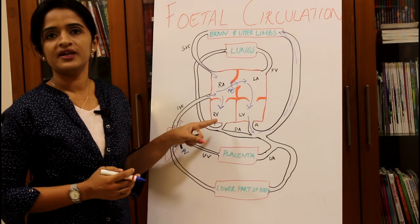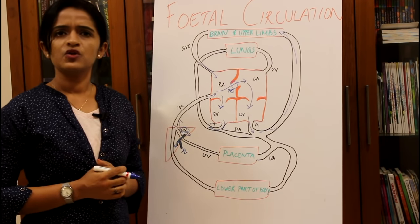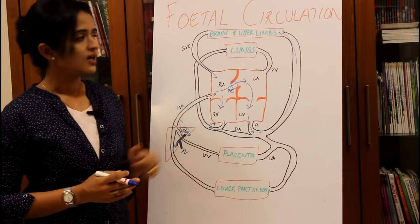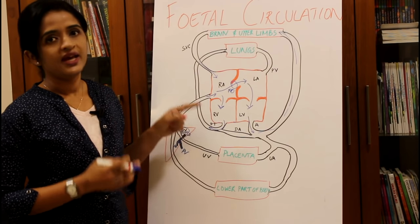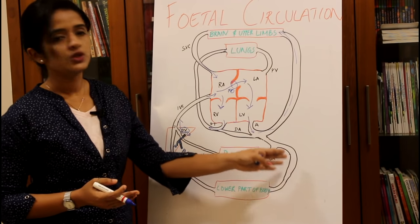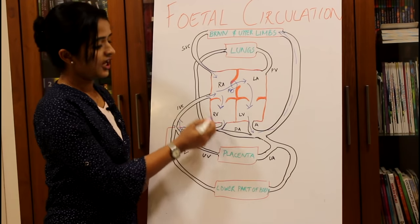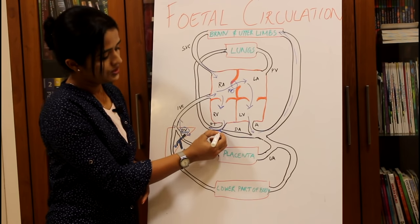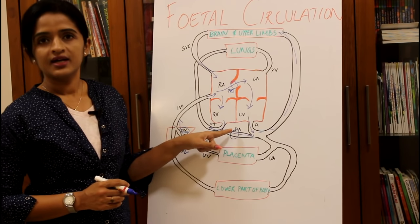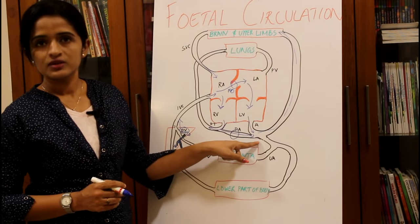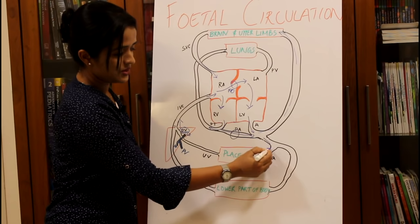Normally blood in the right ventricle passes through the pulmonary trunk to reach the lungs. However, since the lungs are not functional in the fetus, the major quantity of blood entering the pulmonary trunk must be shunted into the aorta so it can supply the lower body and be returned to the placenta for oxygenation. This shunt occurs through a bypass channel known as the ductus arteriosus, which connects the pulmonary trunk with the aorta.